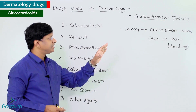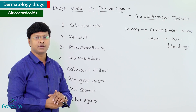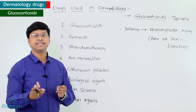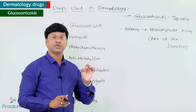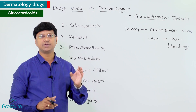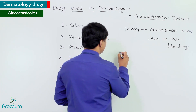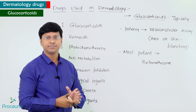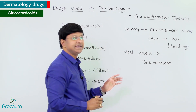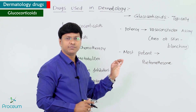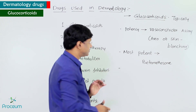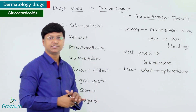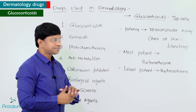An important multiple choice question: which is the most potent and which is the least potent topical steroid? The most potent topical corticosteroid is betamethasone dipropionate, whereas the least potent topical glucocorticoid is hydrocortisone.